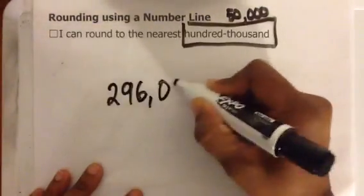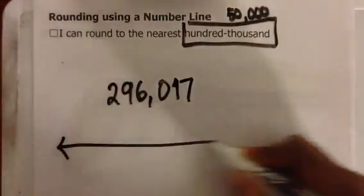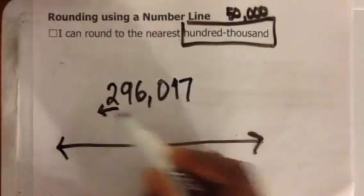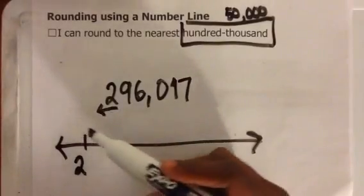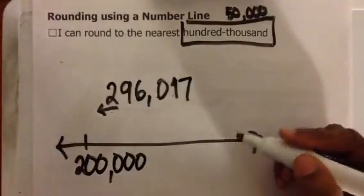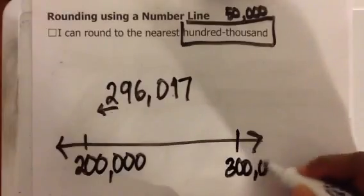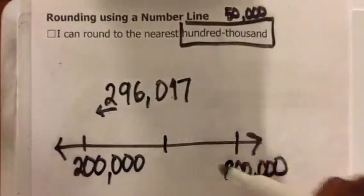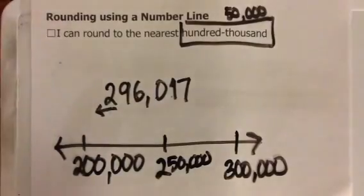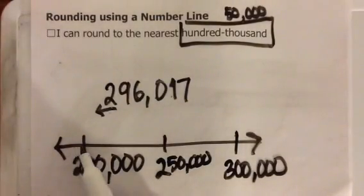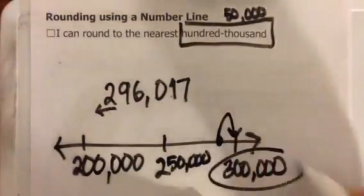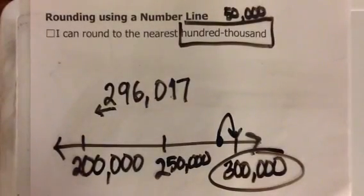Let's do two hundred ninety-six thousand seventeen to the nearest hundred thousand. Ones, tens, hundreds, thousands, ten thousands, hundred thousands — there's two there. Everything to the left gets left; everything to the right becomes a zero. Two hundred thousand plus one hundred thousand is three hundred thousand. Halfway between is fifty thousand. Two hundred thousand, two hundred fifty thousand, three hundred thousand. Simply plot two hundred ninety-six thousand seventeen on this number line — right here. Two hundred ninety-six thousand seventeen rounded to the nearest hundred thousand is three hundred thousand.